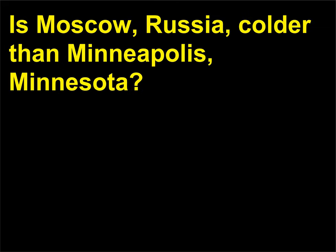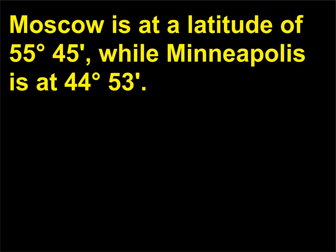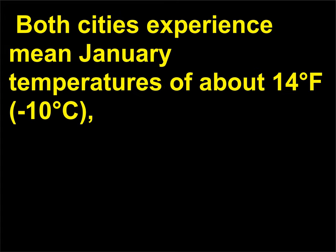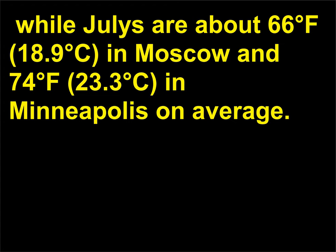Is Moscow, Russia, colder than Minneapolis, Minnesota? Moscow is at a latitude of 55 degrees 45 minutes, while Minneapolis is at 44 degrees 53 minutes. Nevertheless, they have similar climates. Both cities experience mean January temperatures of about 14 degrees Fahrenheit (minus 10 degrees Celsius), while July averages are about 66 degrees Fahrenheit (18.9°C) in Moscow and 74 degrees Fahrenheit (23.3°C) in Minneapolis.